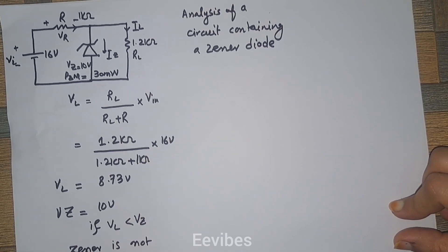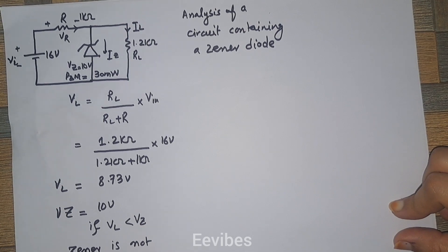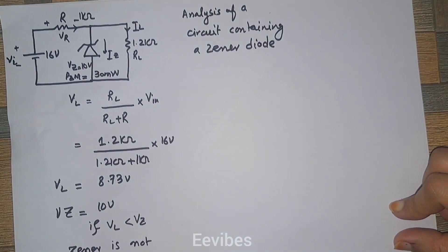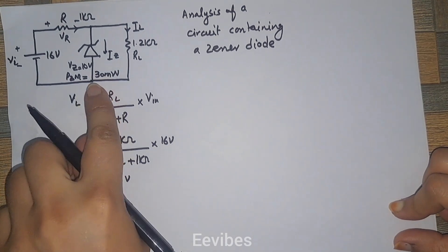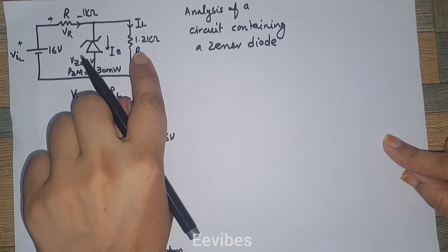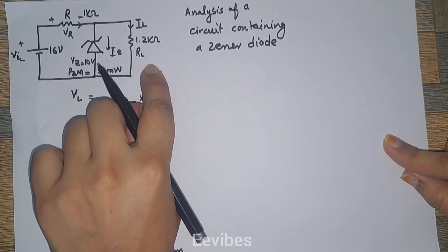Because it's not providing or giving the required voltages, we will replace the zener with an open circuit. If the output voltage delivered to the load had been equal to 10 volts, then the zener was on.